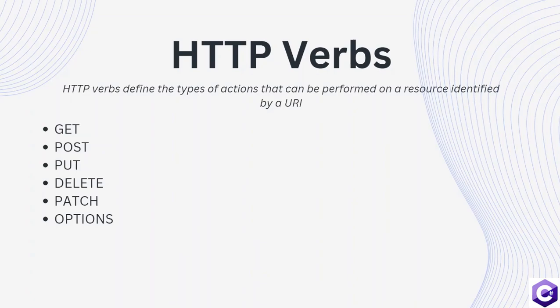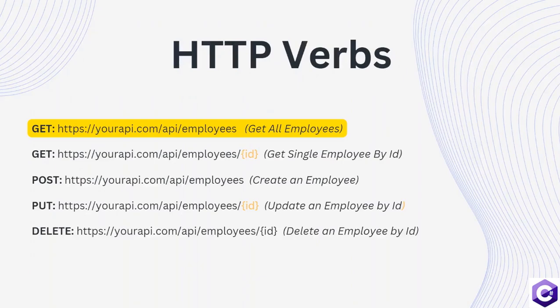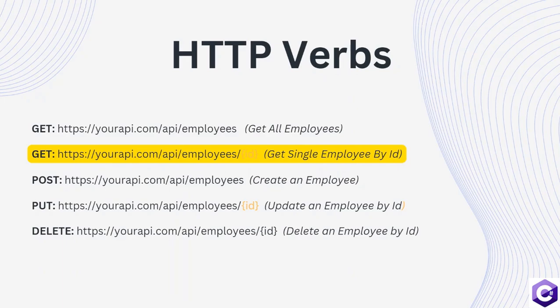Let's see some common use cases of these HTTP verbs and how they identify actions on different URIs. If you see the first highlighted action, which is pointing to yourapi.com/api/employees, this URI will be used along with the HTTP GET verb to get the list of all employees. This is the URL convention that we use when we have to get a resource. If you look at the second row, we are reusing some of the bits from the first row, pointing to yourapi.com/api/employees.